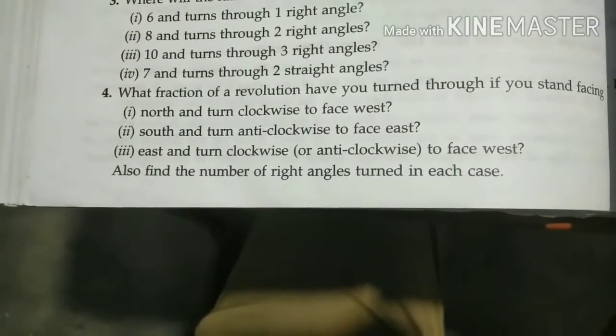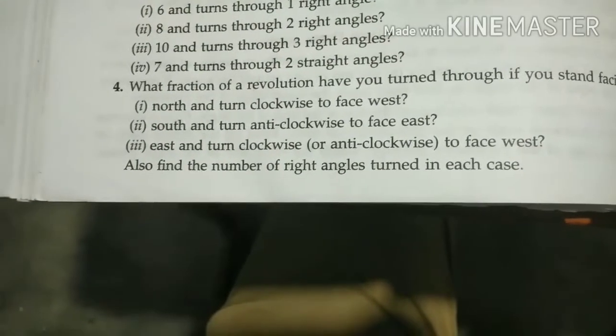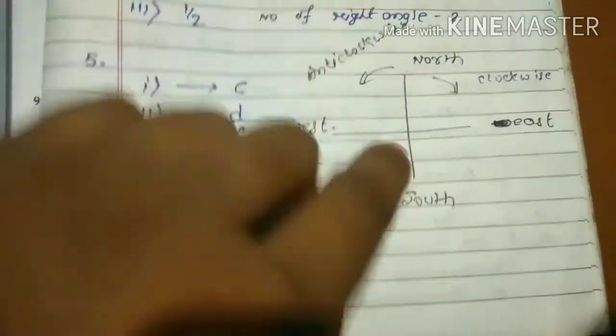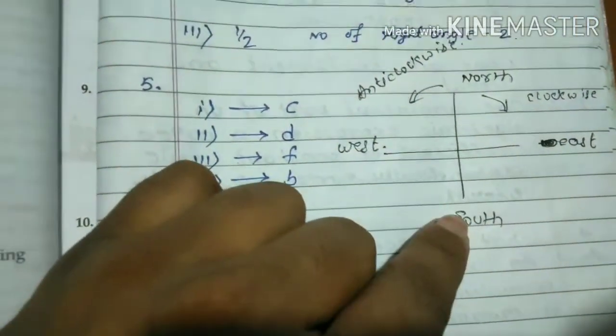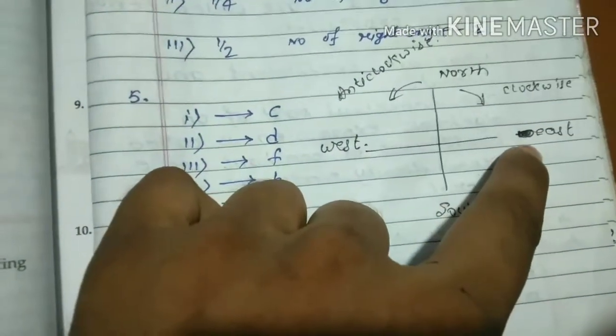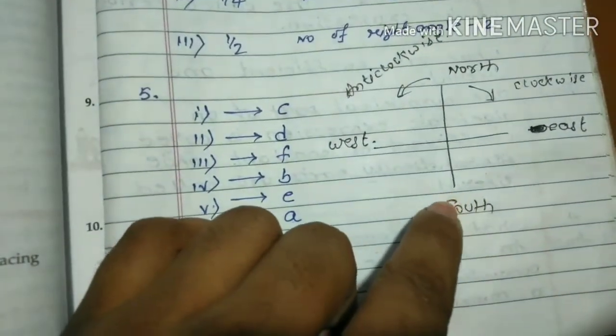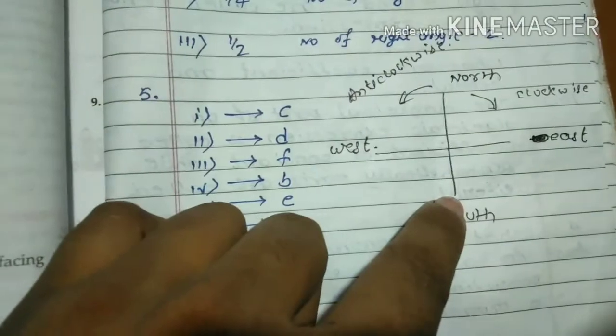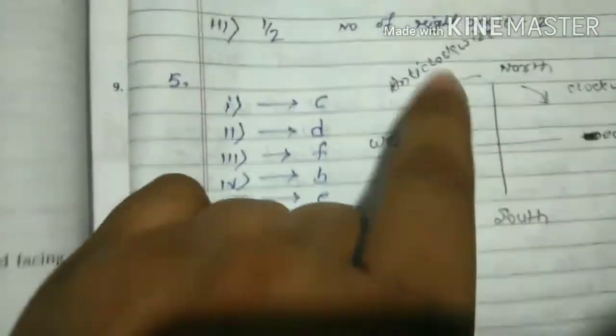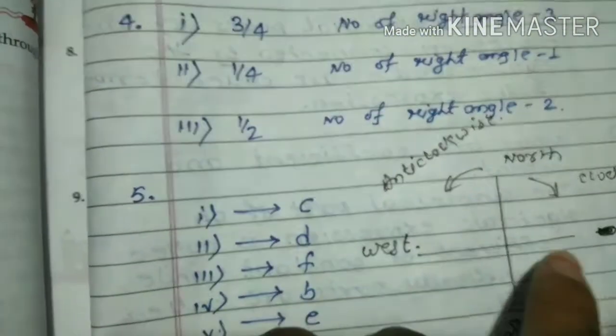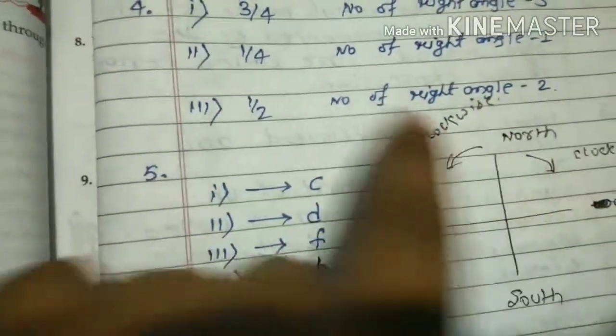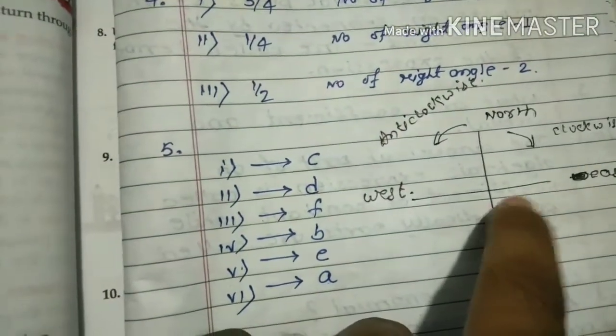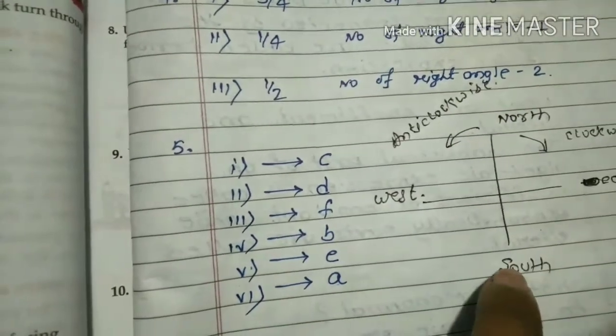Second point: south and turn anticlockwise to face east. You are in south, then move anticlockwise to reach east. The answer is 1 upon 4.